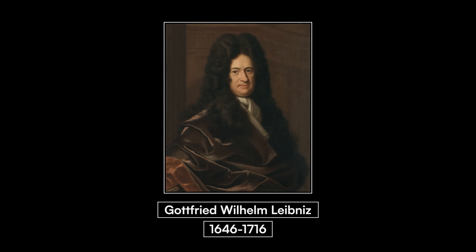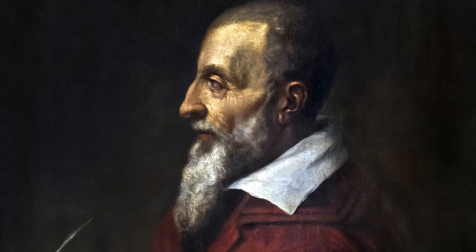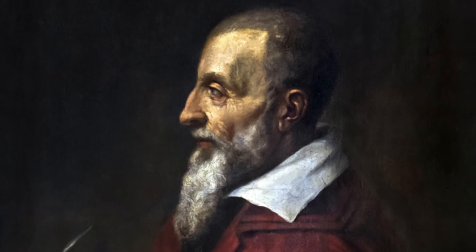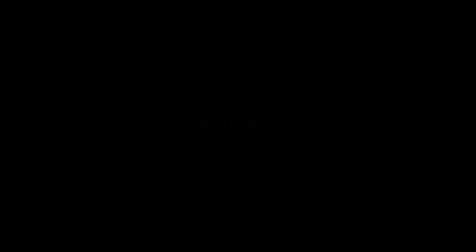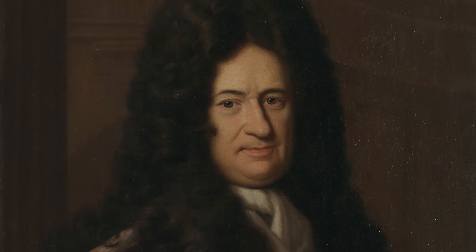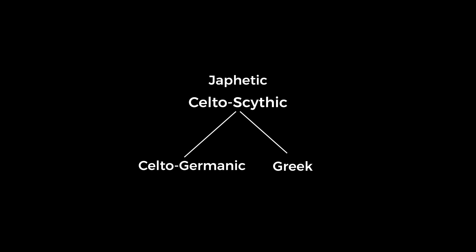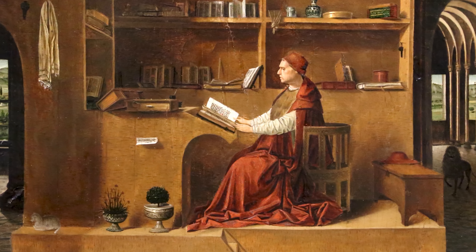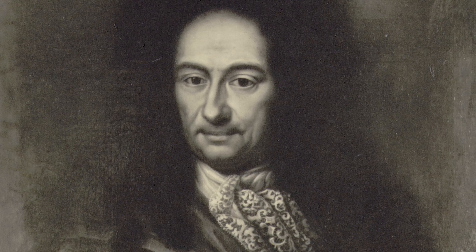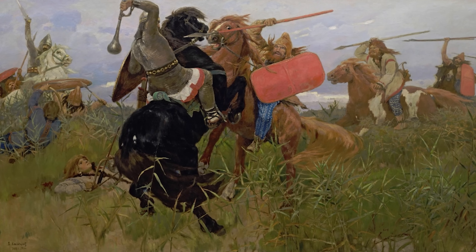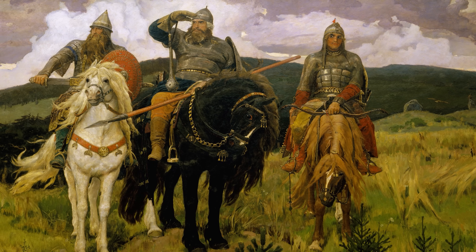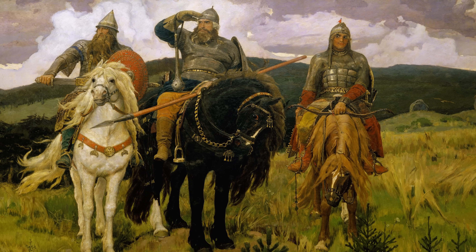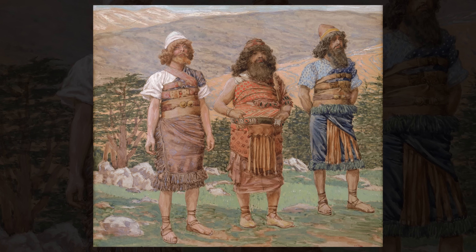Gottfried Wilhelm Leibniz, the German polymath who invented calculus alongside Isaac Newton, like Scaliger rejected Hebrew as the origin of all languages, but still favoured the idea of a proto-language. He hypothesised that a common language existed for both Europe and Asia, split into Japhetic in the north and Aramaic in the south. He preferred to call the first branch Celto-Scythic instead of Japhetic, defining it as the common ancestor of Celto-Germanic and Greek. Leibniz extended the territory of Germanic far to the east to comprise the languages of the Sarmatians, ancestors of the Slavs, and the Tartars, and ultimately placed the origin of the northern languages in Scythia.